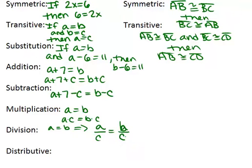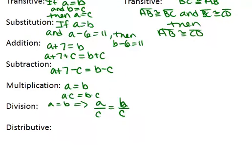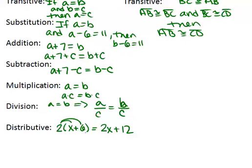The last property you need to know is the distributive property. You've used this in algebra — it basically says that you can distribute in the case where you have a constant or coefficient outside of a binomial, trinomial, or some polynomial, and you can distribute to rewrite that expression. For example, you would have 2x plus 12 — you just multiply the 2 by both terms in the parentheses. All of these properties are important to know so that you can provide good justifications in proofs.